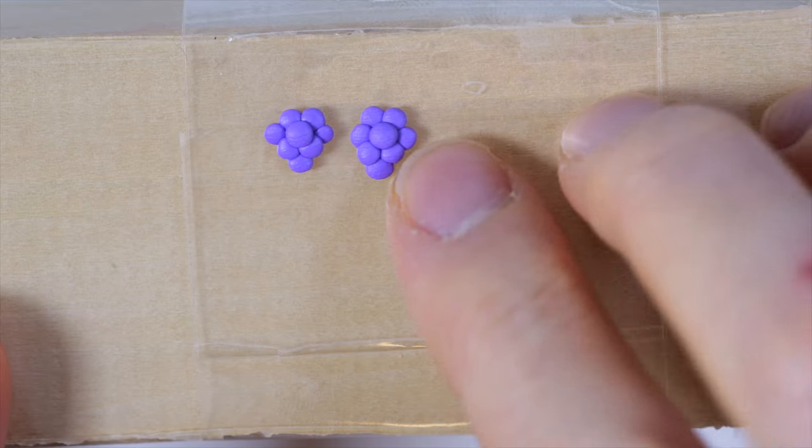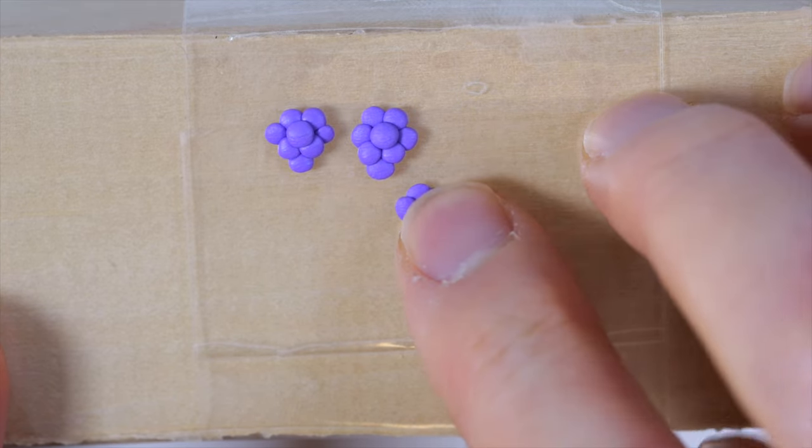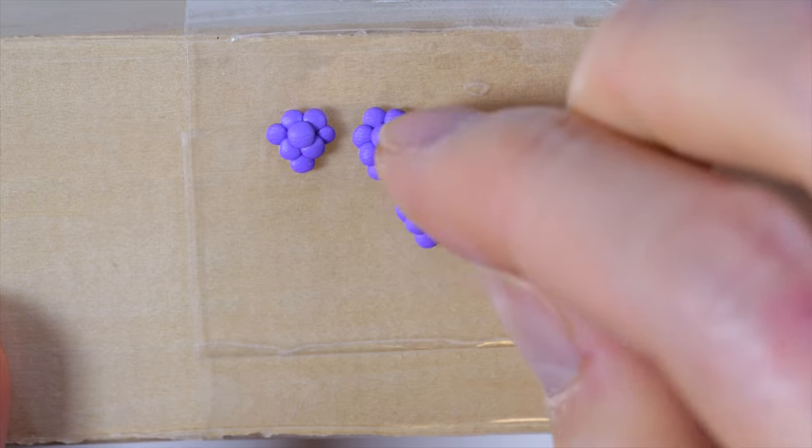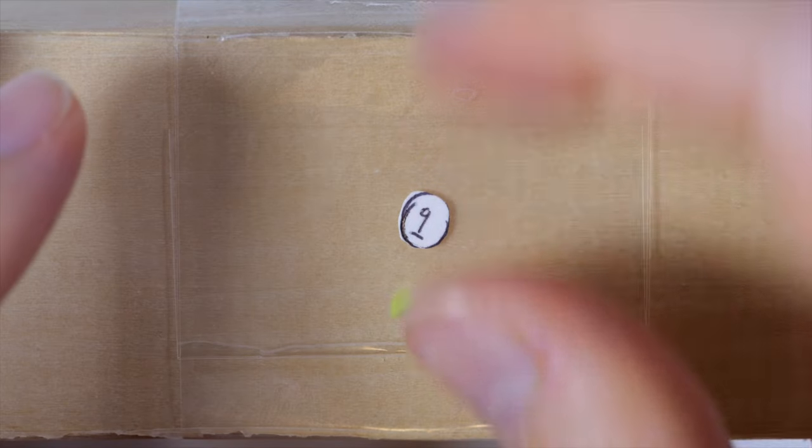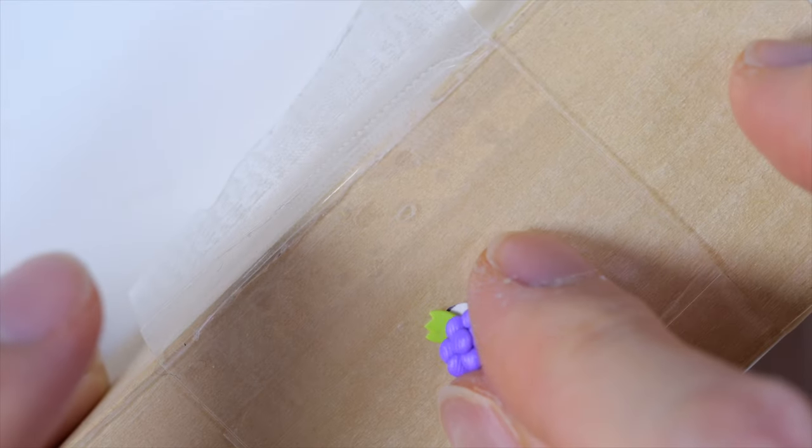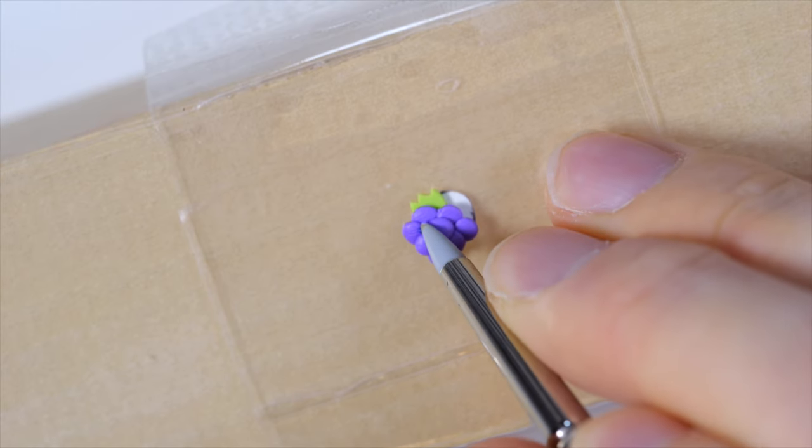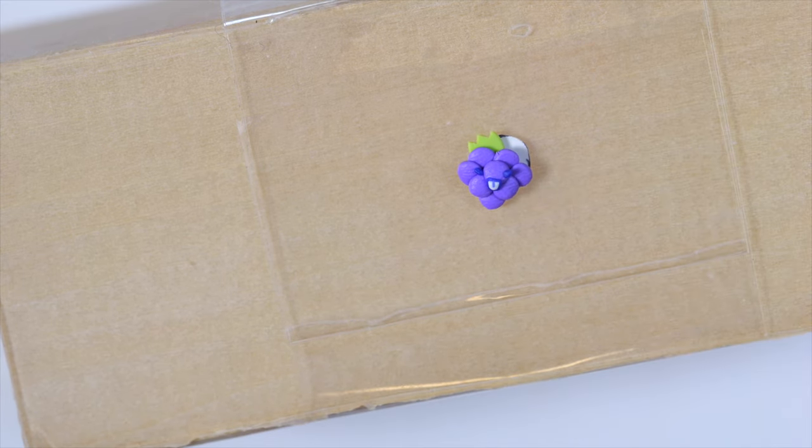So for the grapes, we're just going to arrange some purple dots of clay in a certain way. So I made the sides first. Then I stacked the middle on top of everything. And I gave it a little green footprint for the leaf. And placed all our grapes on top. And then two little oval eyes and a little mischievous smile.